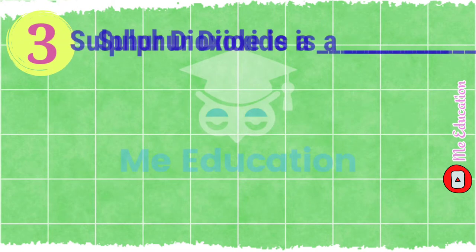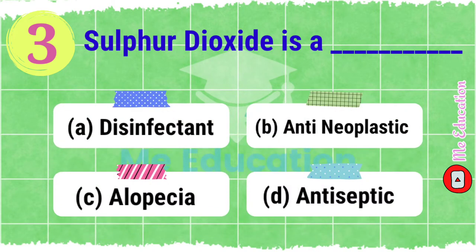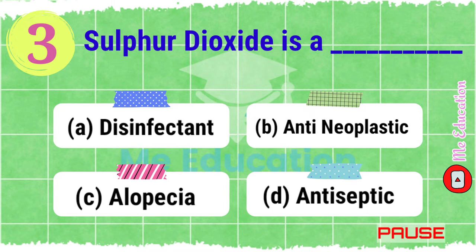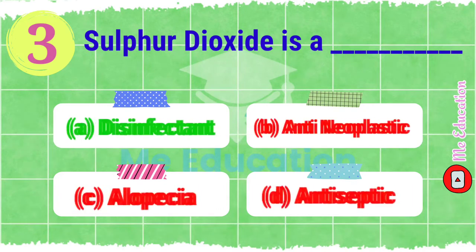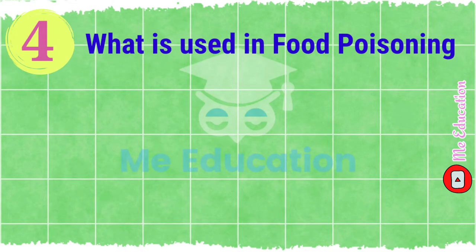Question number three: sulfur dioxide is a dash. Options: A) disinfectant, B) anti-neoplastic, C) eclampsia, D) antiseptic. Pause the video and try to answer. The right answer is option A, disinfectant.